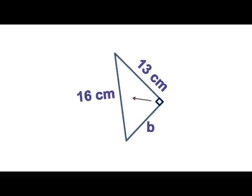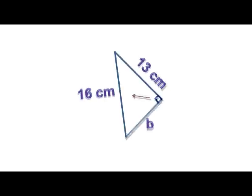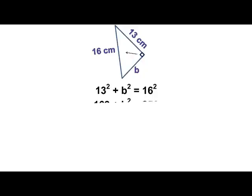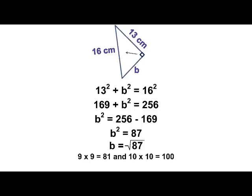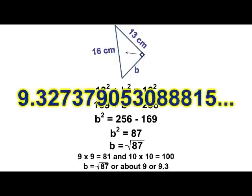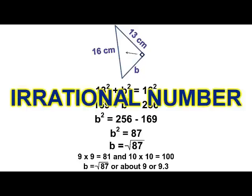Check this one out. We have a right triangle with one leg of 13 centimeters and a hypotenuse of 16 centimeters. We do not know the length of one of the legs, but we do have the Pythagorean Theorem to help us. 13 squared equals 169, and 16 squared equals 256. If we use our algebra skills, we can move the 169 to the other side and get 87. But 87 is not a perfect square — it's between 81 and 100, but closer to 81. So the missing leg is the square root of 87, or about 9, or more exactly about 9.3, which is just an irrational number.